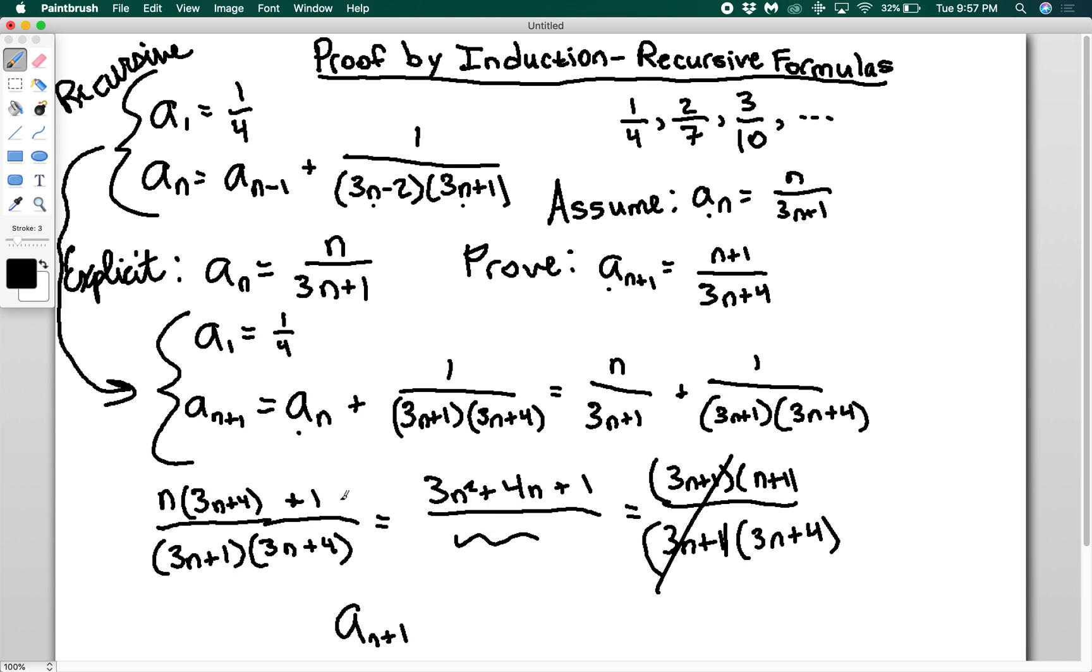Now I can rewrite this: an+1 = (n+1)/(3n+4). That's what we were trying to prove. This is how you do recursive formulas. Often it's useful if your recursive formula is defined in terms of n and n-1 to re-index it in terms of n+1 and n, because that allows for easier substitution of your assumption into the statement you're trying to prove.